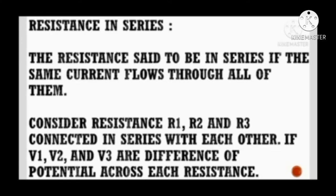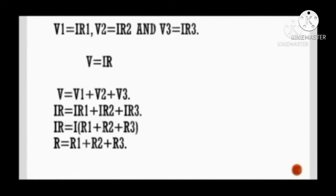Resistance in series: Resistances are said to be in series if the same current flows through all of them. For example, if we have three resistances connected in series, the potential difference across each resistance gives V1 equals IR1, V2 equals IR2, and V3 equals IR3. Therefore, total resistance R equals R1 plus R2 plus R3.